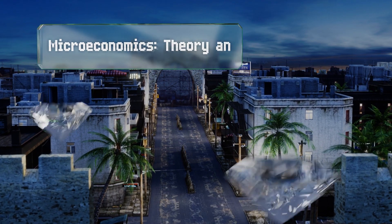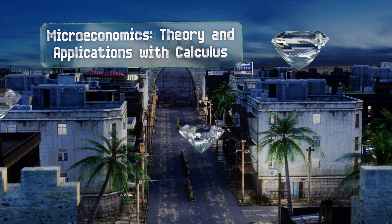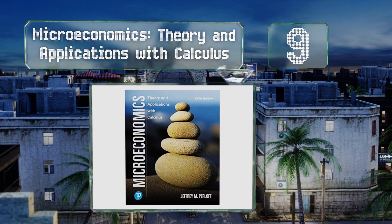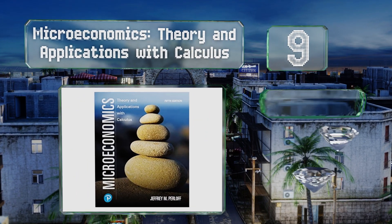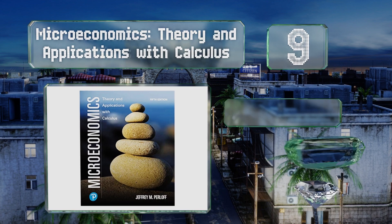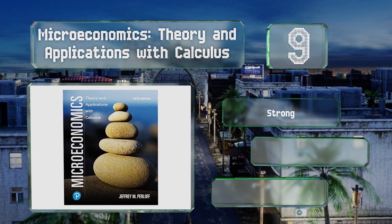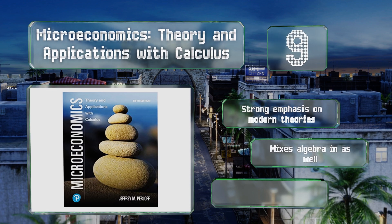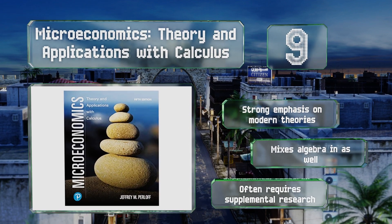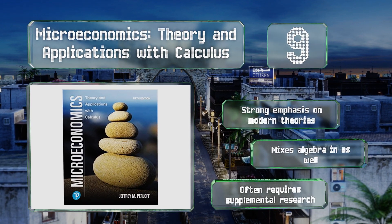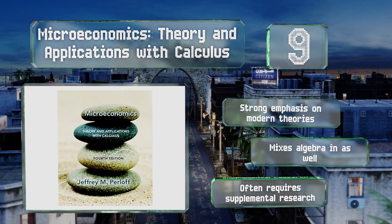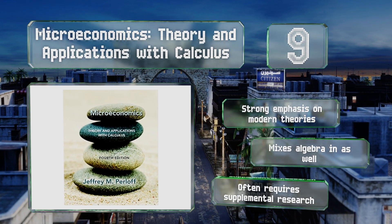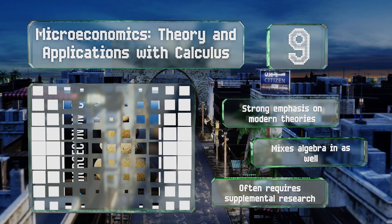At number nine, a must for the math-minded, Microeconomics Theory and Applications with Calculus uses step-by-step instructions to demonstrate how to analyze policy issues and solve problems. It uses data culled from real people and companies to reinforce the practicality of the subject. It places a strong emphasis on modern theories and mixes algebra in as well, but it often requires some supplemental research.